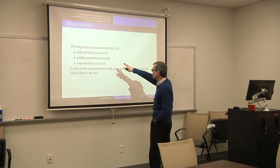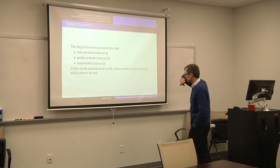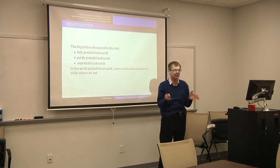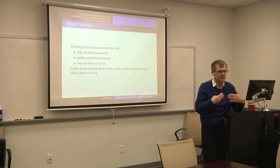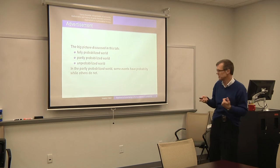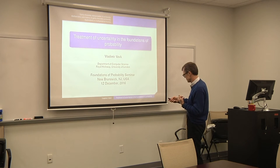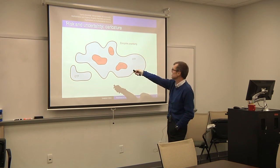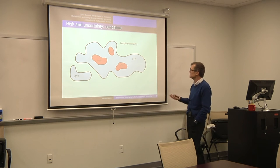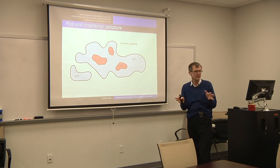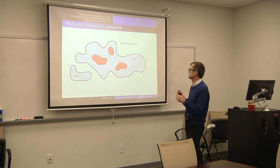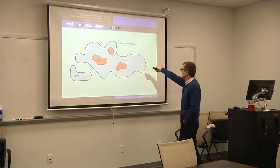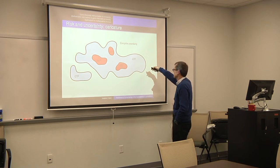So we have these three parts. In this partly probabilised world, some events have probabilities and other events don't. I'll try to give some examples of these situations. I call it risk and uncertainty — when we have probabilities, we know the stochastic mechanism. With uncertainty, it's complete uncertainty and we don't know anything, but there's also a part where there is some mixture.